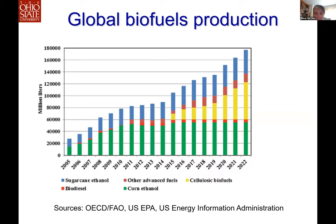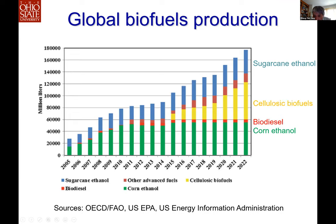The global biofuel production is increasing every year and this projection will continue to increase. Among this biofuel, most is corn ethanol and sugarcane ethanol — earlier it was almost 100 percent, and it is projected to reduce because cellulosic biofuel is projected to increase to replace corn and sugarcane. The other advanced fuels like higher alcohol and hydrocarbon are also growing. You can see the continued growth over the last 15 to 20 years.